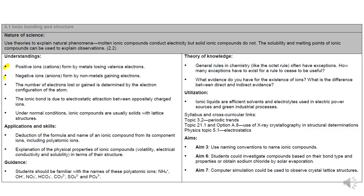We'll talk about ions in general, talk about the link between ions and electron configuration, then ionic structures, naming ionic compounds, and physical properties of ionic compounds. I'm not going to go through specifically the list of complex ions you need to know, but you should know that list just off the top of your head.